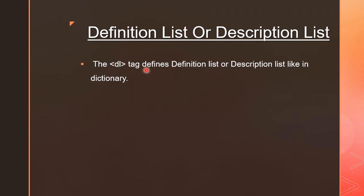The DL tag defines a Definition List or Description List, like in a dictionary. So which tag is used for Definition List? The DL tag. D stands for Definition or Description, and L means List. Remember, this is L — it is not I — because many students make mistakes writing DI instead of DL.